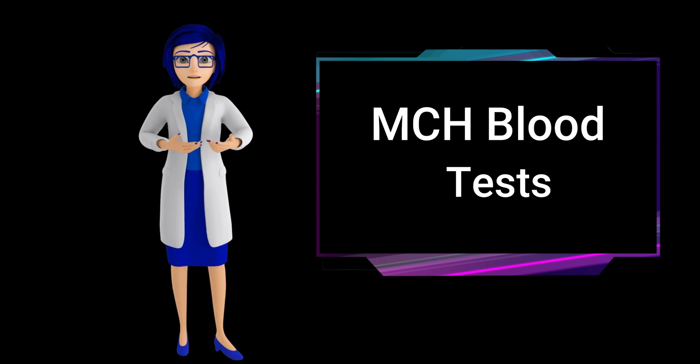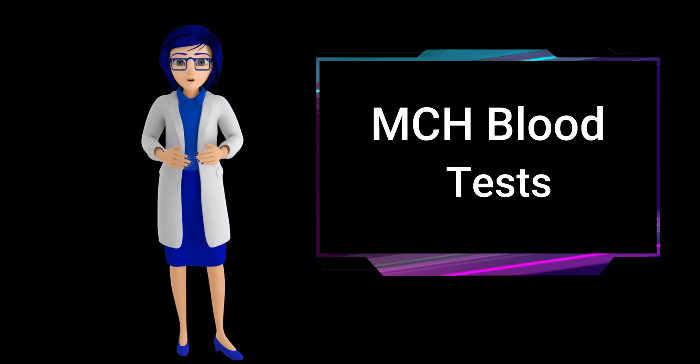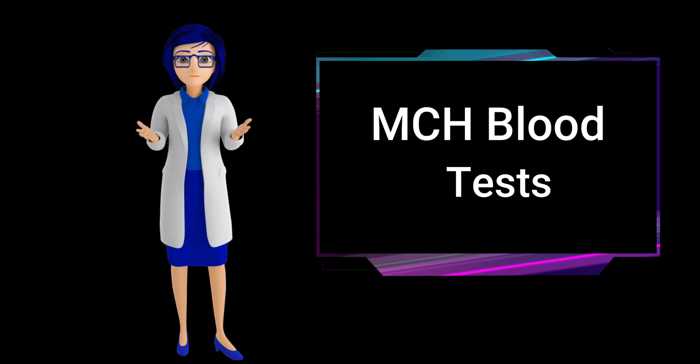MCH stands for mean corpuscular hemoglobin, which measures each red blood cell's average amount of hemoglobin. Hemoglobin is the protein responsible for carrying oxygen throughout the body.